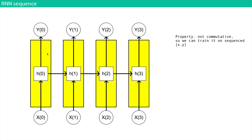h(3) is a function of h(2), which is itself a function of h(1) — so h(3) is a function of every previous time step before it. This is important because it's not commutative. If you pass in a sequence of data and reorder it, h(3) would be different. The order matters, which means we can operate on sequences.